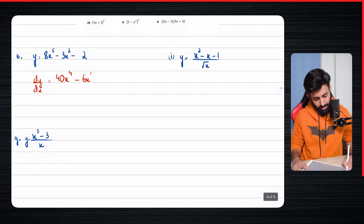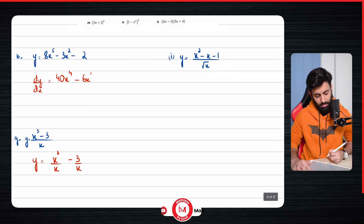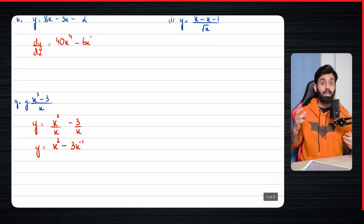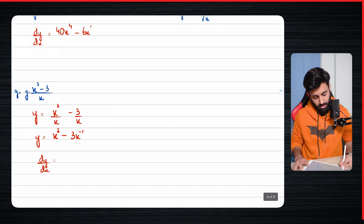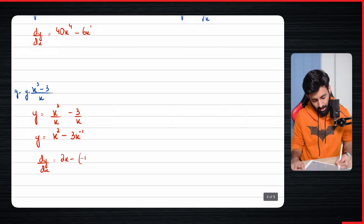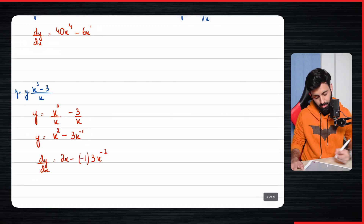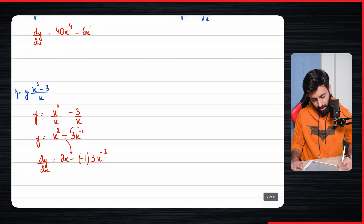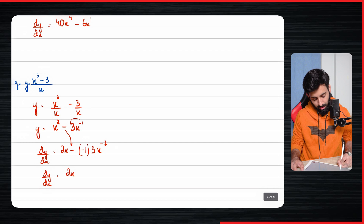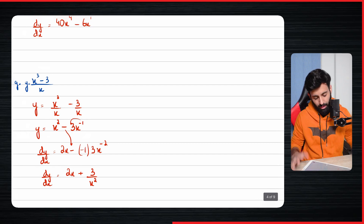Now let's do part g. There's a bit of simplification needed before we can differentiate. Write x cubed over x separately, and minus 3 over x separately. x cubed over x simplifies to x squared minus 3x to the power minus 1. Now it's ready to be differentiated. dy/dx becomes 2x, and then — be very careful with the negative signs — minus minus 1 multiplied by 3 gives minus 3, and overall becomes plus 3 because minus minus is plus. So dy/dx equals 2x plus 3 over x squared.